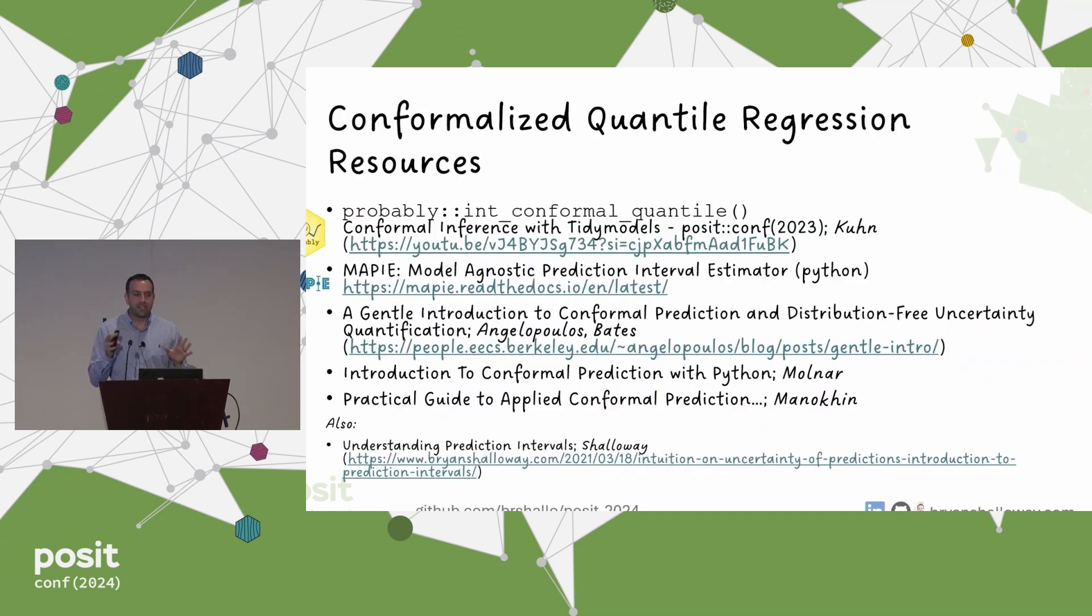In terms of implementations of this approach, in R, the probably package has a bunch of really useful tools for doing conformal inference. Max Kuhn gave a talk on this last year that I really recommend checking out. In terms of this conformalized quantile regression method, there's this function int_conformal_quantile that is an implementation of this with random forests. In Python, you can use the MAPIE package. And then I also really recommend checking out the article as well as associated YouTube videos on a general introduction to conformal prediction, if you want to get a little bit more detail on these procedures and also where you can use them in different contexts.